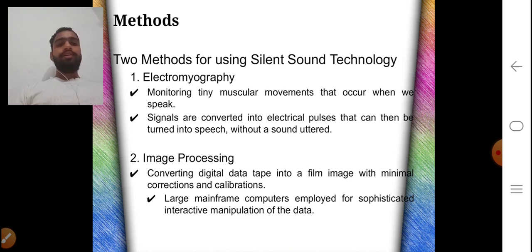Electromyography is a method by which monitoring tiny muscular movements that occur when we speak. But in image processing, converting digital data tape into a film image with minimum correction and calibration.